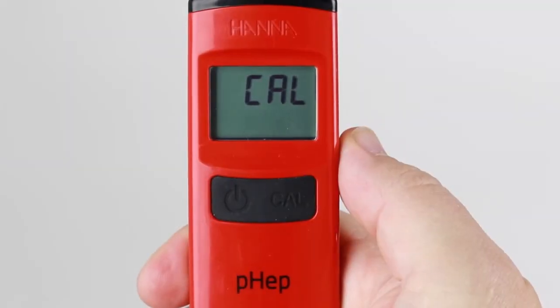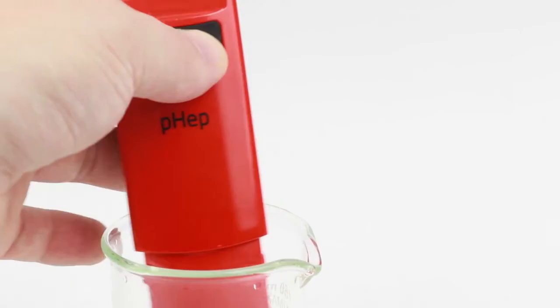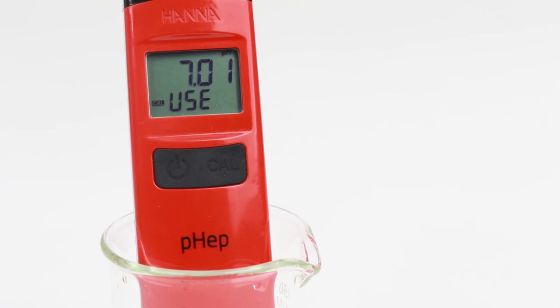To calibrate the meter, press the Cal button while the meter is on to enter calibration mode. For two-point calibration, the meter will prompt for the pH 7.01 buffer. Once the buffer is automatically recognized, the buffer will be updated and REC will be displayed and the meter will then display pH 4.01.